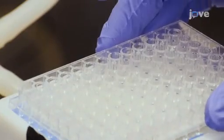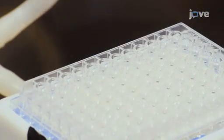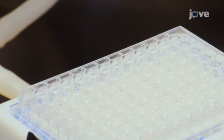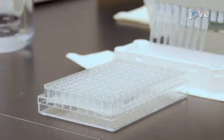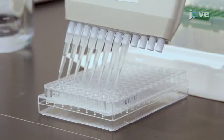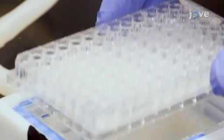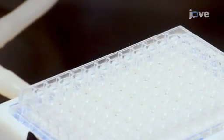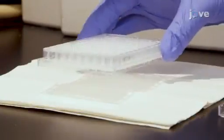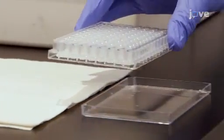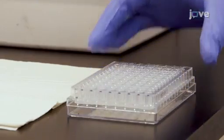Without inverting, place the plate on the vacuum manifold and apply the vacuum as before. Then add 200 microliters of 1X wash buffer to each well. Remove the contents of the assay plate wells by vacuum filtration. Blot excess wash buffer from the bottom of the plate with an absorbent pad or paper towels before repeating this step one more time.